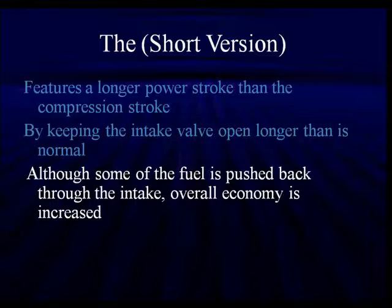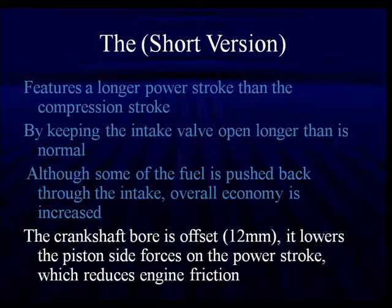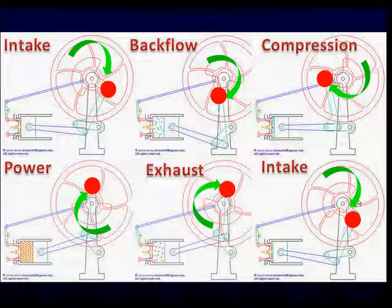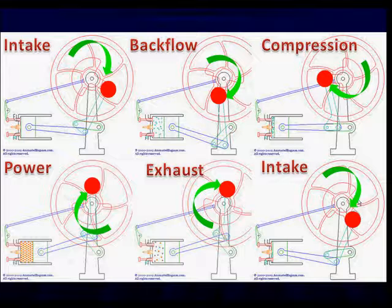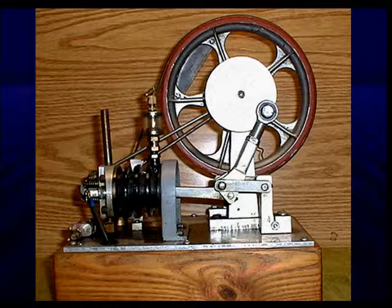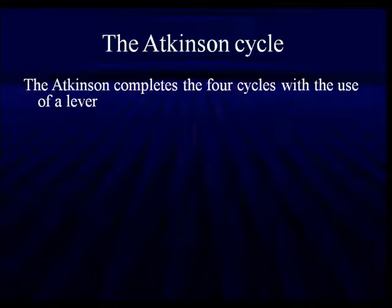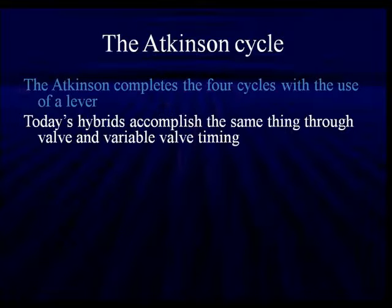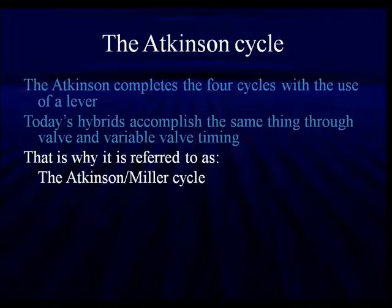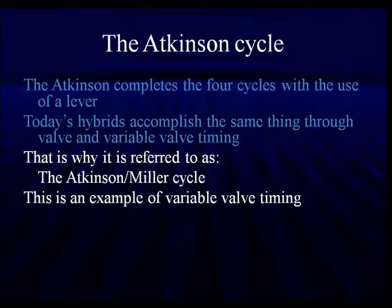With variable valve timing, we can achieve this without badly punishing low-end and high-end performance. Now, the true Atkinson engine uses a lever and a cam on the side with an offset to control the intake valve. It completes four cycles using a lever on the side to offset the opening or timing of the intake valve — not very practical since we don't see them much anymore. Today's hybrids accomplish the same thing with variable valve timing. This is why we refer to it as the Atkinson-Miller cycle. Miller was an American engineer who took the Atkinson concept and said, 'I don't have to do this with complicated levers — I can do it with variable valve timing.' This is a prime example of variable valve timing.